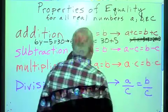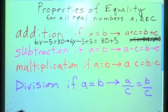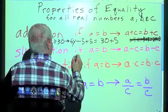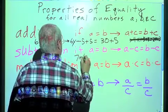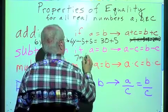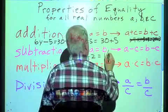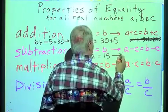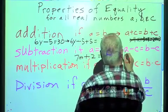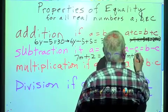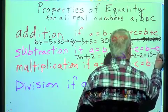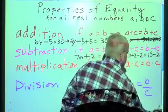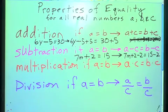Down here, an example of that one would be, let's say 7Y plus 2 equals 15. Then 7Y plus 2 minus 2 equals 15 minus 2. Allows us to do that.